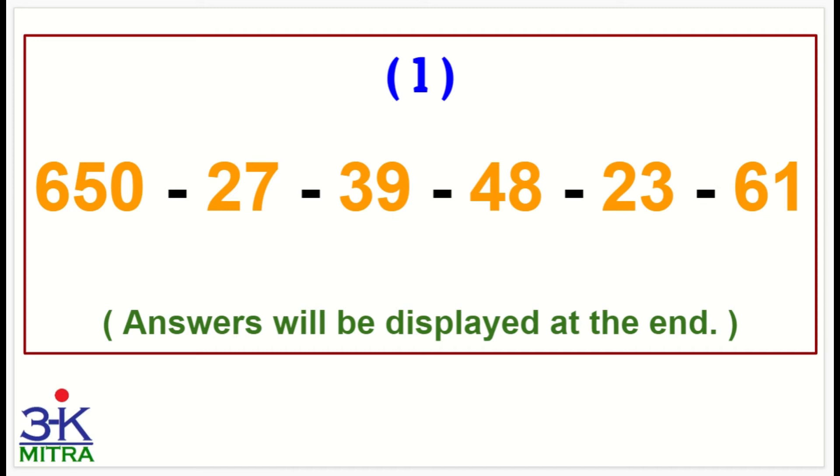Let's move to the second sum now. Again, 650 to begin with, then minus 38, minus 44, minus 59, minus 73, minus 18. Okay, write down your answer.